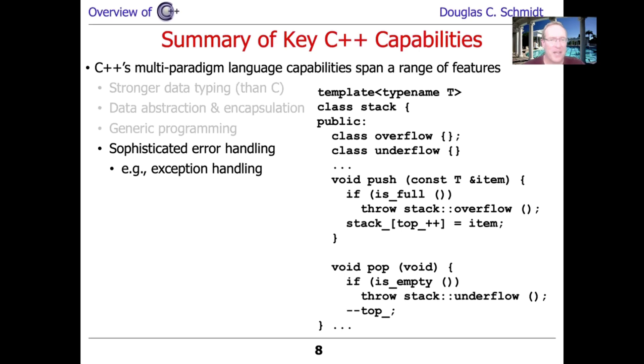So adding exception handling to C++ was a very important step forward. But it didn't come without headaches. And so a lot of this course is going to teach you the patterns and idioms to do exception handling properly. This particular piece of code just takes a snippet of our stack. And you can see it defines some nested classes, one called underflow and one called overflow. And then we update the push and pop methods to basically go ahead and check to see if the stack is full. And if it's full, when we try to push, we throw the stack overflow exception. And if the stack is empty, when we're trying to pop, we go ahead and throw the underflow exception.